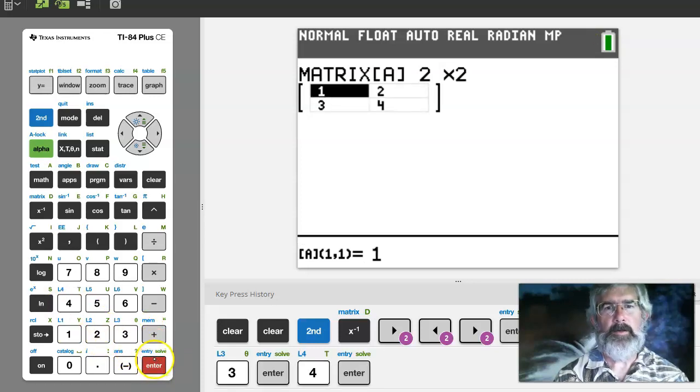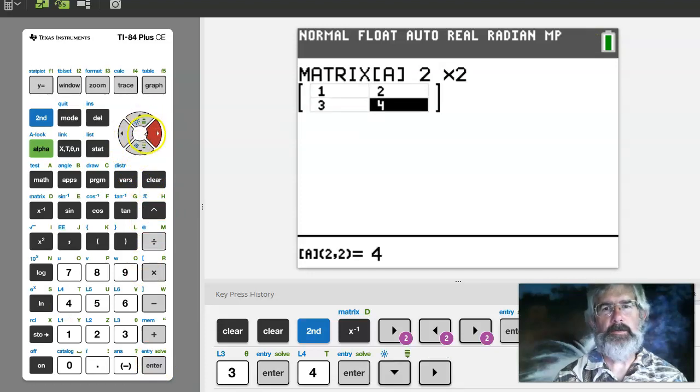So I want 1, 2, 3, 4. It just works its way around. Now you can use the arrows to move around as well if you want to change something in a particular spot. Just move to the one you want, type in the new number you want.